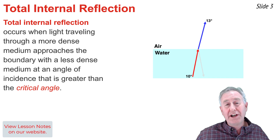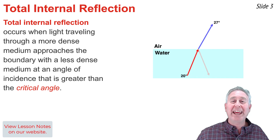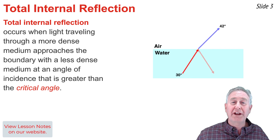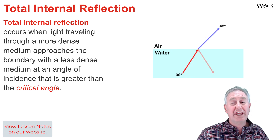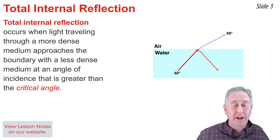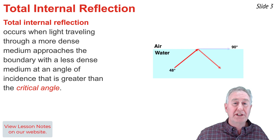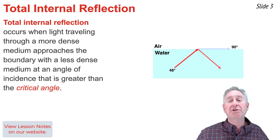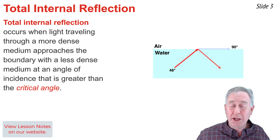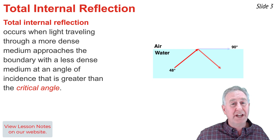This causes the angle of refraction to be greater than the angle of incidence. As you increase the angle of incidence, the angle of refraction increases even more. You can imagine there would be some angle of incidence for which the refracted ray would lie along the boundary line with an angle of refraction of 90 degrees.